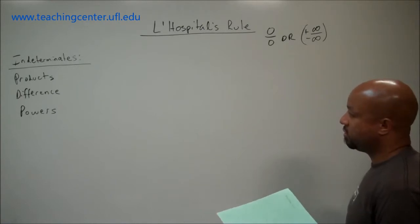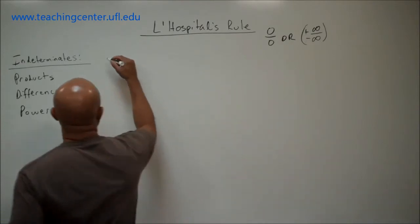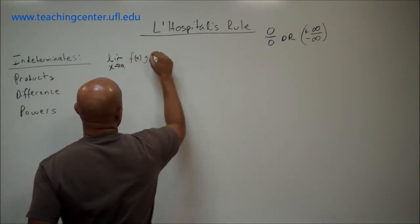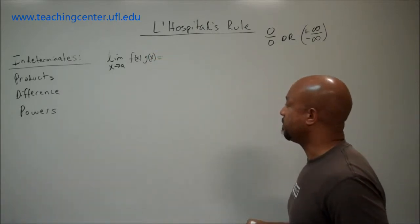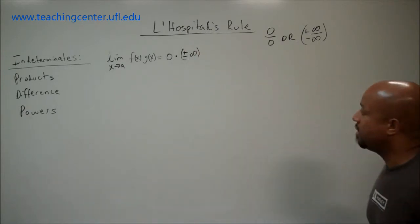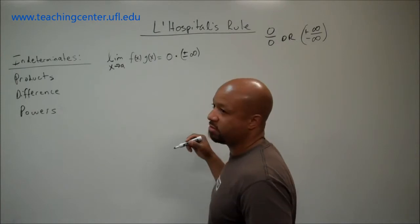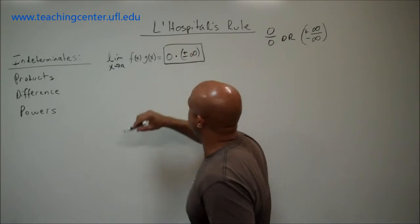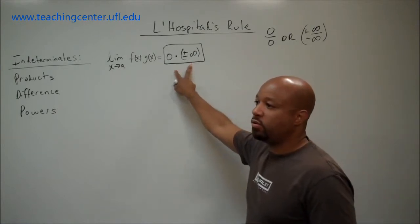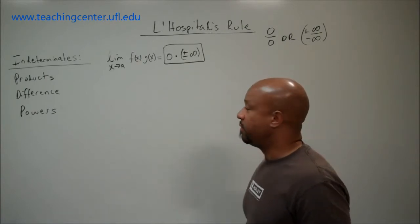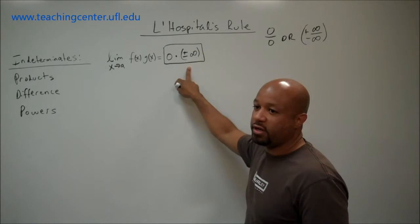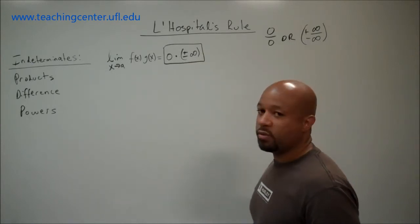The first one we're going to discuss is indeterminate products. Basically, if we have the limit as x approaches a of f(x) times g(x), and when we evaluate that limit we get 0 times plus or minus infinity, that is called an indeterminate product. It's indeterminate because we don't know which part — the 0 or the plus or minus infinity — dominates. If 0 dominates, the product is 0; if infinity dominates, it's plus or minus infinity. It's unclear, so we call it indeterminate product form.